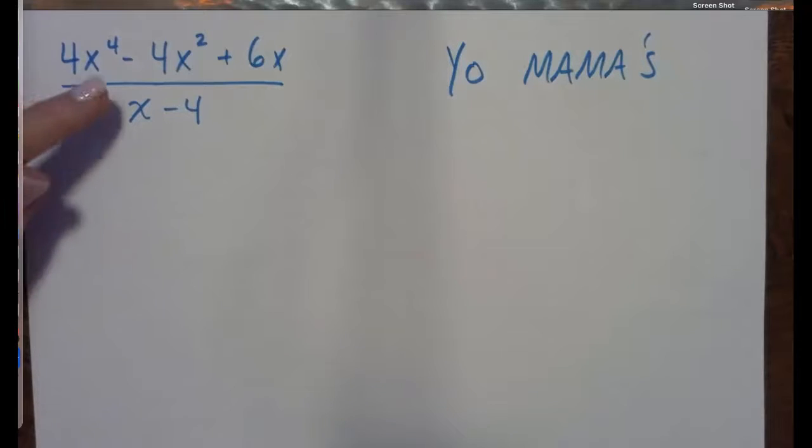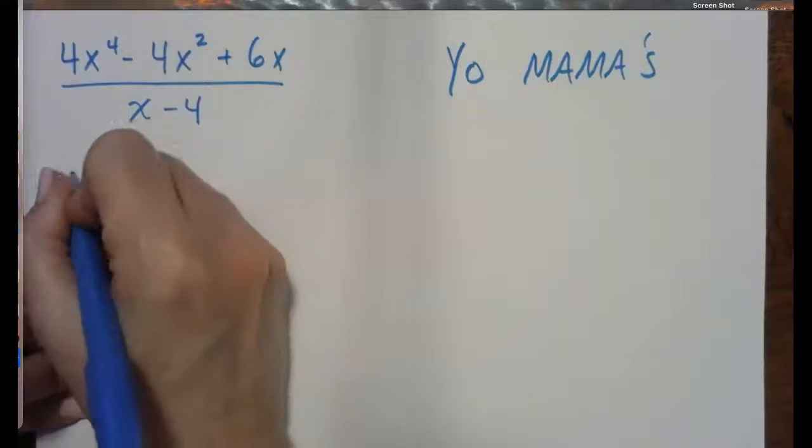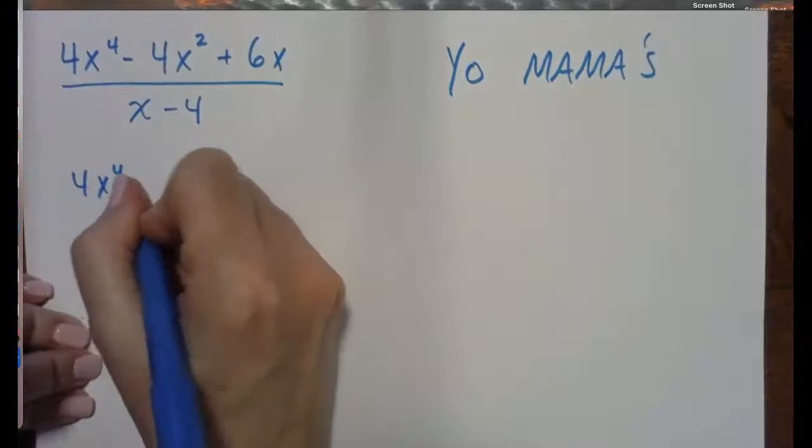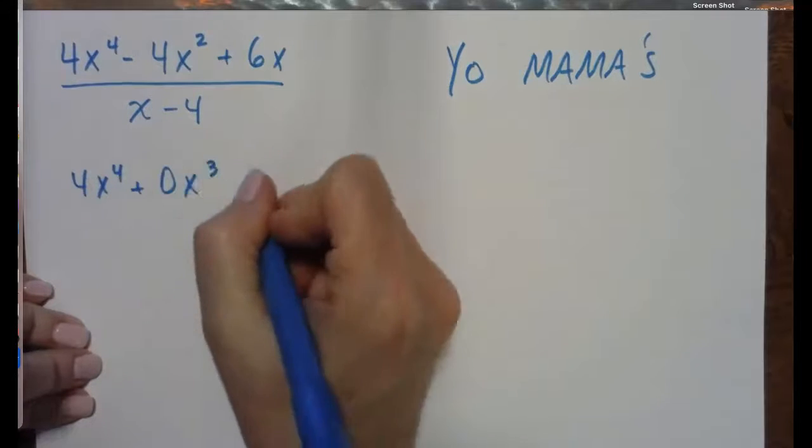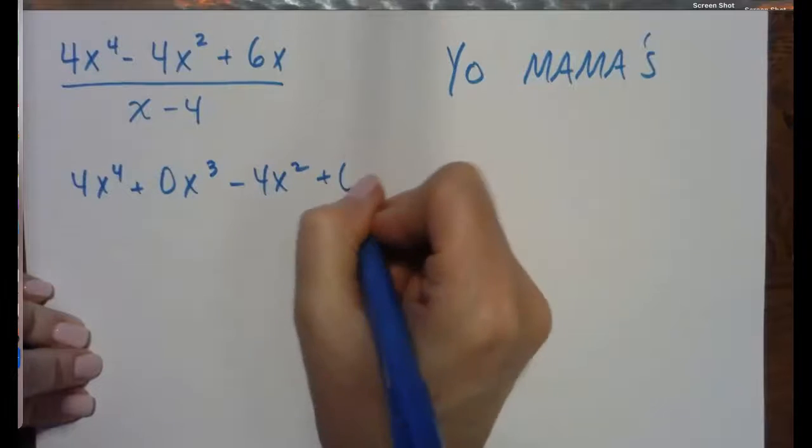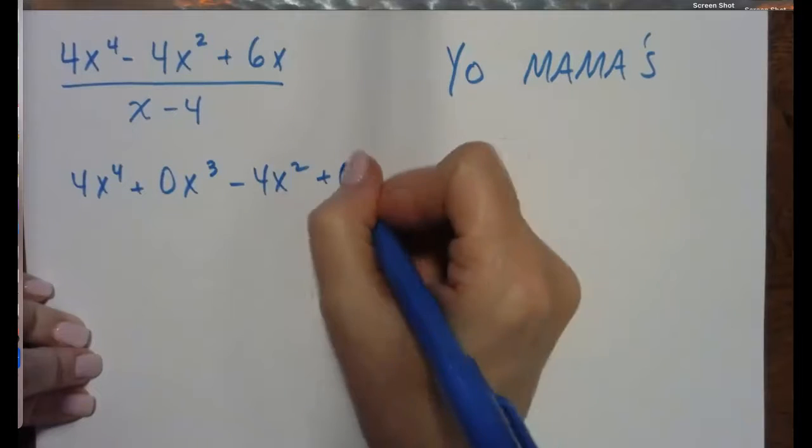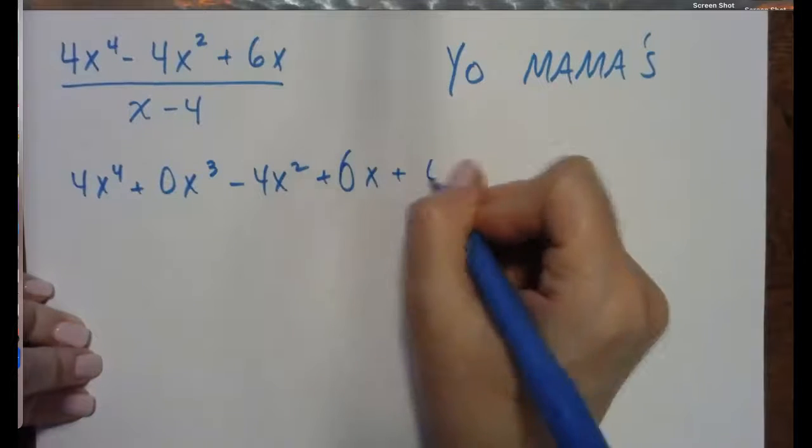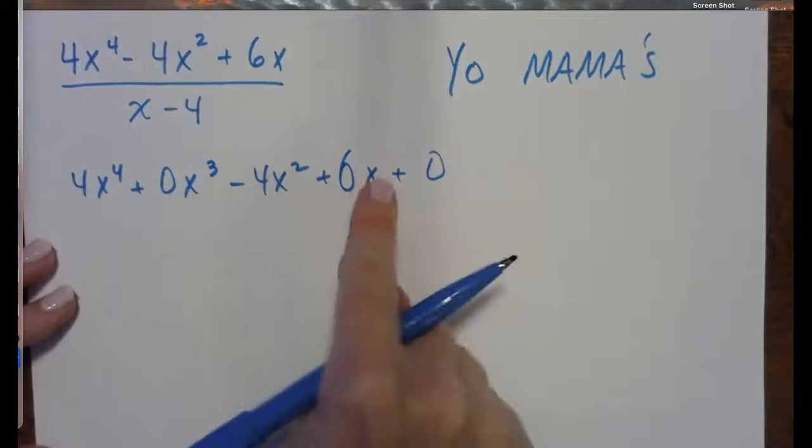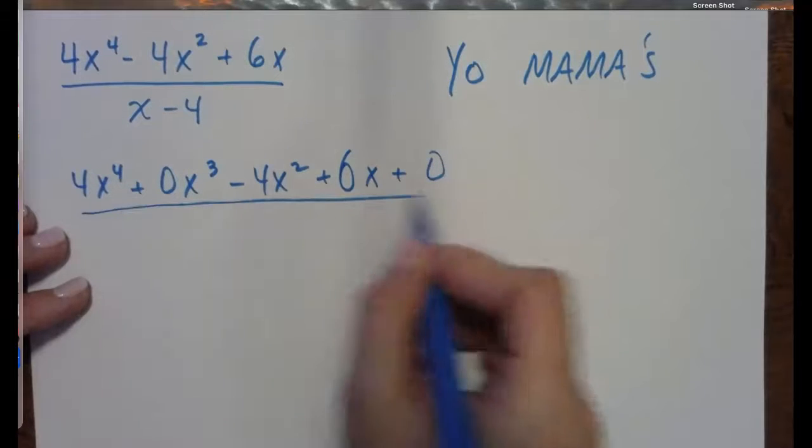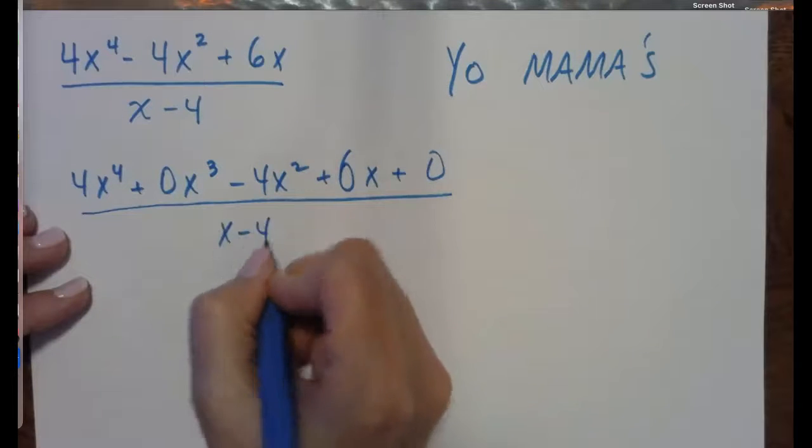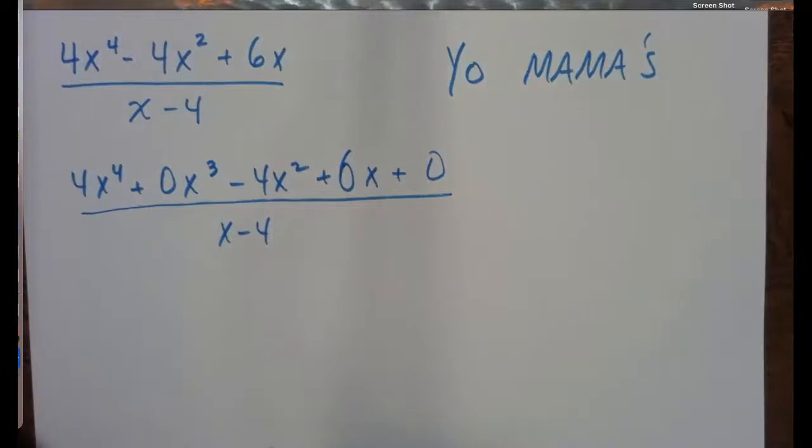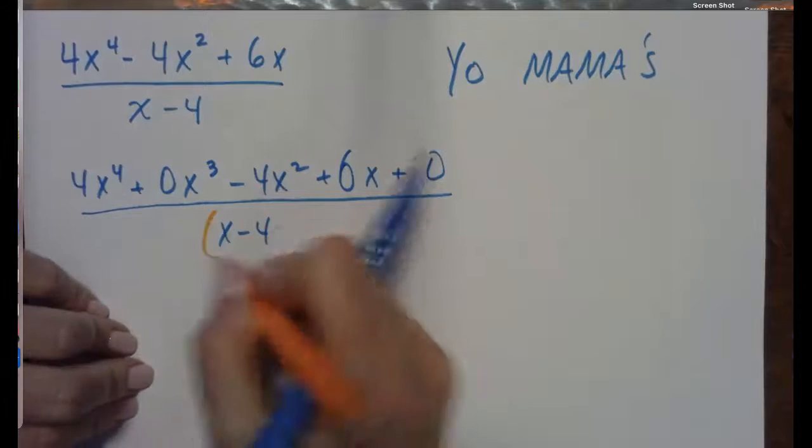The first thing we've got to do is we've got to get our dividend set up because we are missing some powers of x. We've got 4, we've got 2, and we've got 1. So let's rewrite that dividend as 4x to the 4th plus 0x cubed minus 4x squared plus 0x, excuse me, plus 6x plus 0. 4, 3, 2, 1, none.